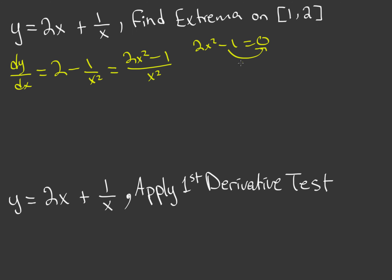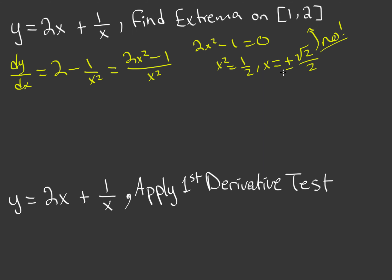Setting 2x² − 1 = 0, we move the 1 over and divide by 2 to get x² = 1/2, so x = ±√2/2. Now we check whether these are within our interval — they are not, so we can't consider them for our extrema on this interval.